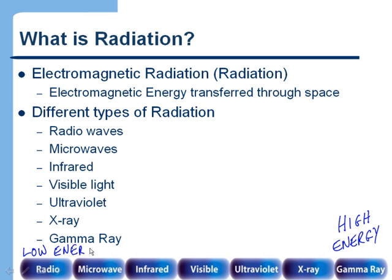The way I've got these written across the bottom is in order from low energy to high energy. One of the things you may have wondered is if visible light and X-rays are essentially the same thing, then why can X-rays go through you and visible light can't? It's simply that X-rays are higher energy — they're towards the high-energy end of the electromagnetic spectrum. So X-rays have high energy and can go through things like skin, while visible light has less energy and just bounces off.